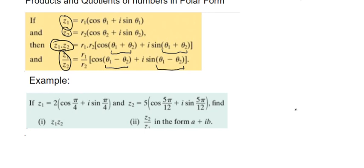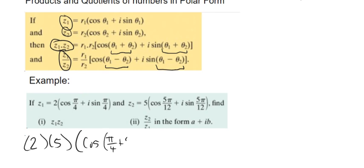So for our first one, we've got Z1 and Z2. We're going to multiply Z1 and Z2 first, just following the rule from above. The two R's in this case, R1 and R2, are 2 and 5. So it's going to be 2 multiplied by 5 outside, and then cos of — our two angles are pi over 4 and 5 pi over 12, so I'm just going to add those two — and then plus i sine, adding the same two angles.